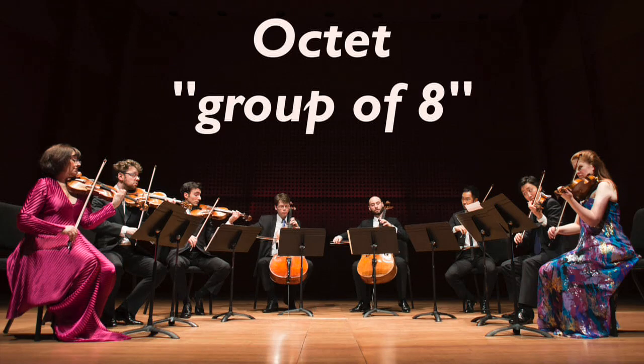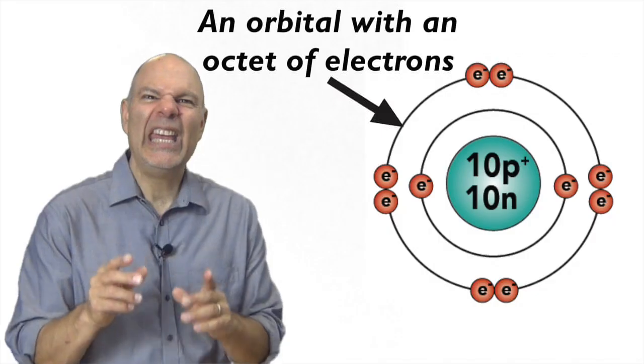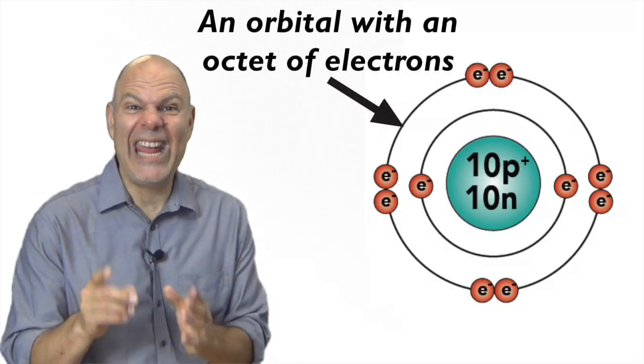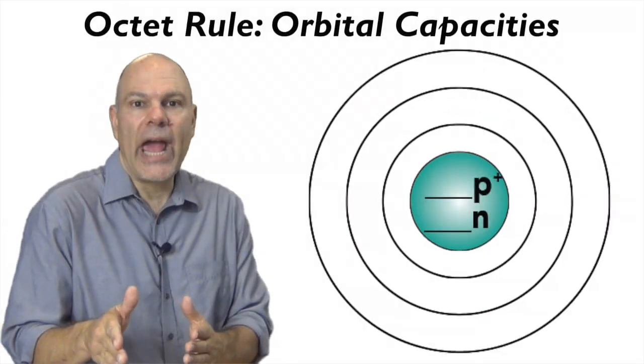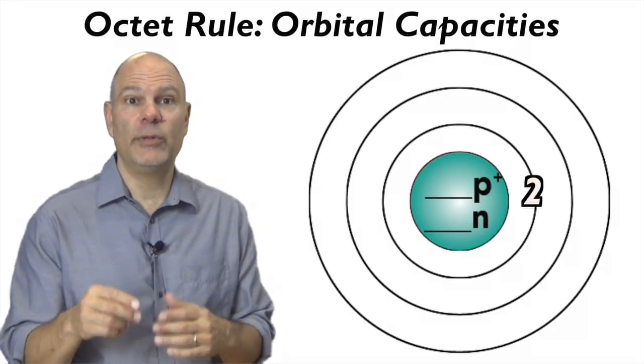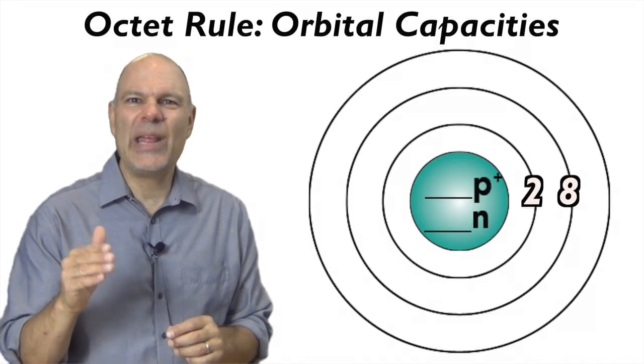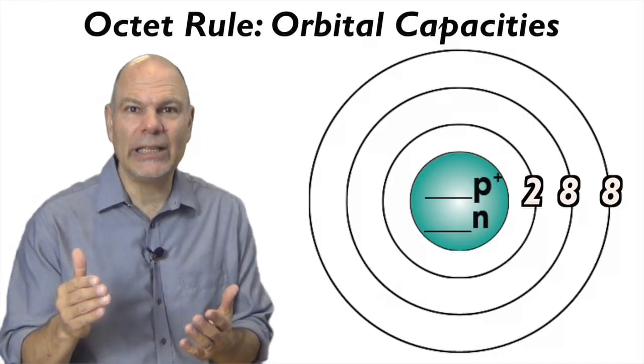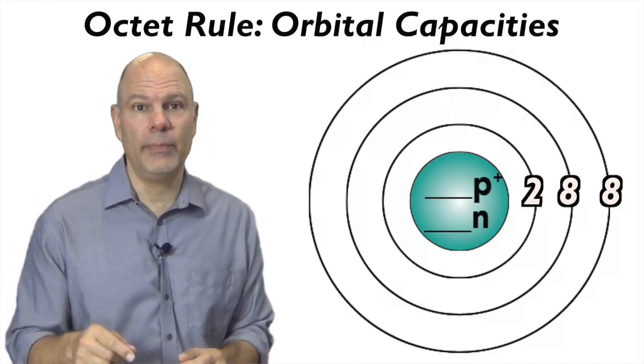The word octet means group of eight. This is a musical octet. In chemistry, octet refers to eight electrons. In terms of drawing atoms, the octet rule works like this. The first orbital can hold up to two electrons. The second and third orbitals can hold up to eight electrons. That's where octet comes in.